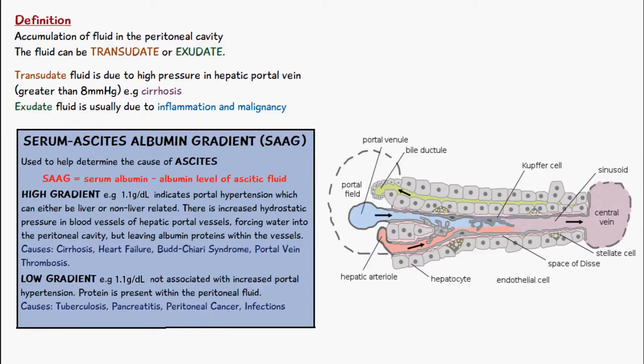If you have a high gradient, for example 1.1 grams per deciliter, that indicates portal hypertension, which can either be liver-related or non-liver-related. This result basically means that there's not much protein in the ascites.